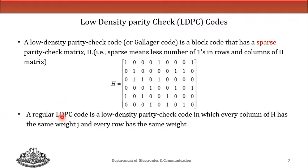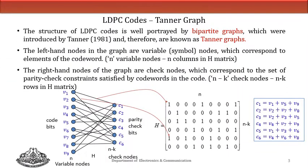Note that the row weight and column weight need not be the same as each other, but all rows should have the same weight and all columns should have the same weight for a code to qualify as a regular LDPC code. From an exam point of view, an important question is to draw the Tanner graph or bipartite graph for an LDPC code whose H matrix is given.